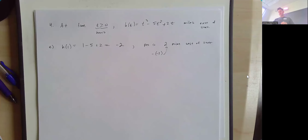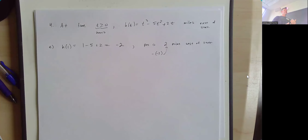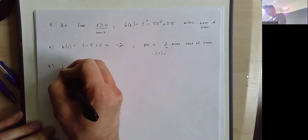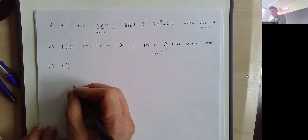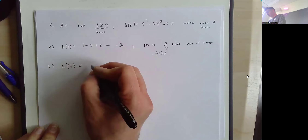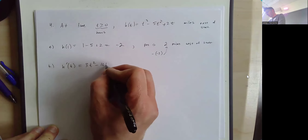What is the speed of the car in miles per hour after exactly one hour? To find instantaneous velocity, we take the derivative. H prime of T, using the power rule, is 3T squared minus 10T plus 2. Plugging in T equals 1: 3 times 1 minus 10 times 1 plus 2 equals negative 5. The units are miles per hour, because position was in miles and time in hours. The velocity is negative 5 miles per hour, meaning we're going west.